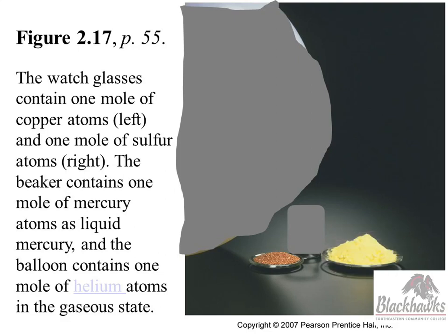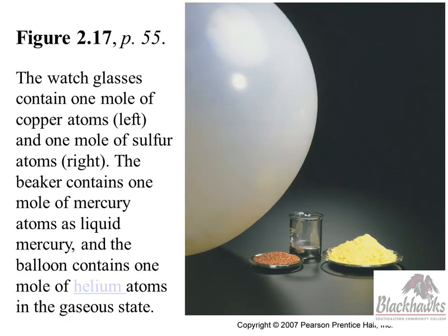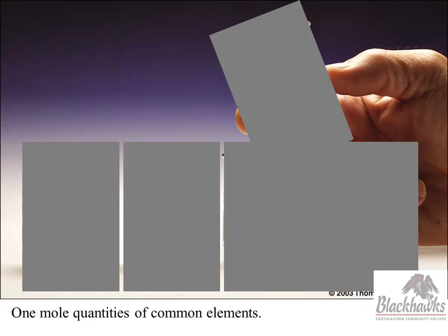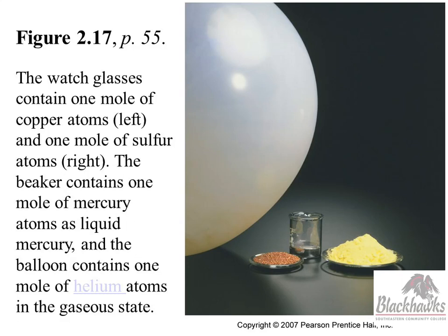So here are some moles of stuff. That is copper. Yellow stuff is sulfur. These have the same number of atoms, 6.022 times 10 to the 23rd atoms. Then we have mercury. Everybody loves to play with liquid mercury, right? And then we have a balloon with helium. Have you guys heard about the helium shortage? So little kids everywhere are freaked out.